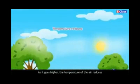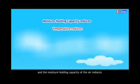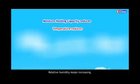As the warm air goes higher and reaches high altitude, the temperature there is lower — this is a known property of the atmosphere. As we go higher and higher from Earth's surface, temperature keeps going lower. The air cools, its moisture holding capacity reduces, and relative humidity keeps increasing.